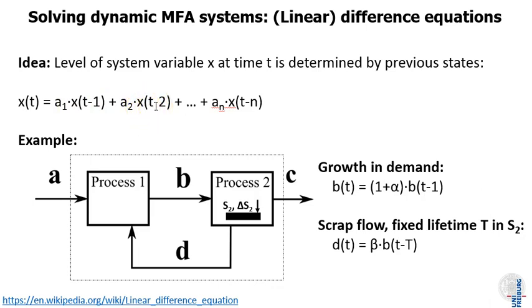Here we want to just have a look at a simple example for the difference equation. This is a model that contains a growth in demand of a certain system variable, a certain flow. So we say that the flow b, the consumption flow, is proportional to the flow b of the last year, and the proportionality factor is 1 plus alpha, so maybe 110 percent or 105 percent.